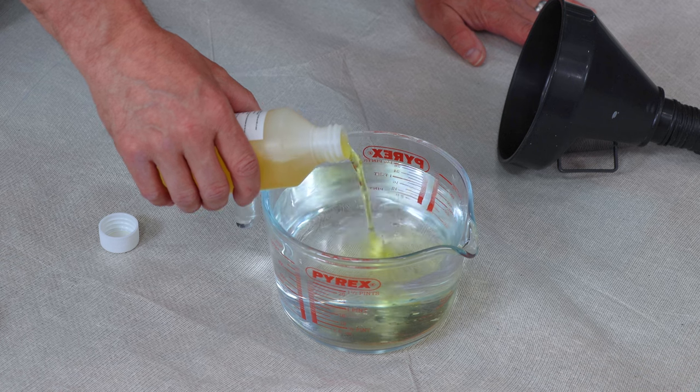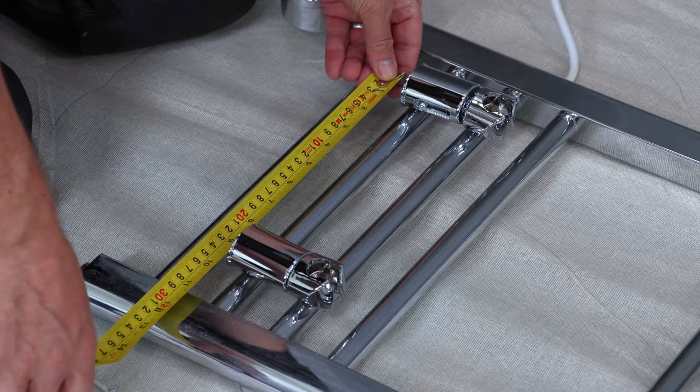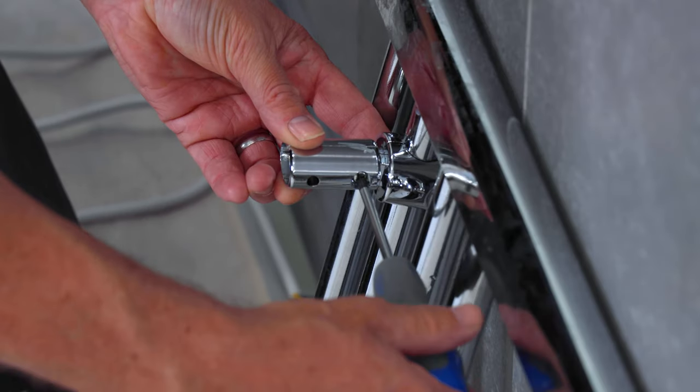Mix your inhibitor with clean water and then pour this through a funnel into the radiator. Measure up for your brackets. Fix these onto the back of the radiator.